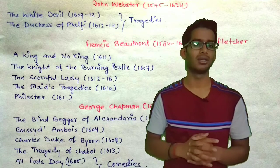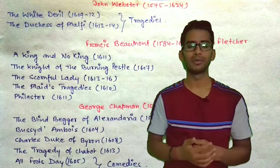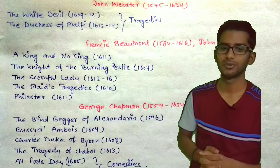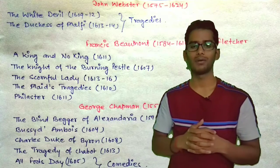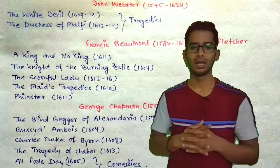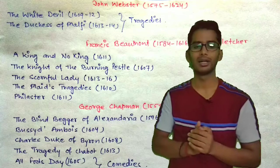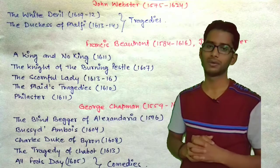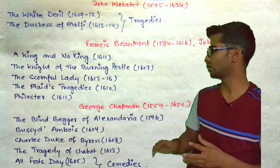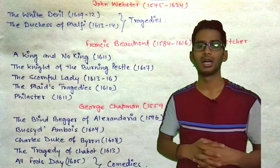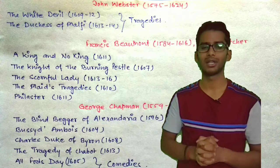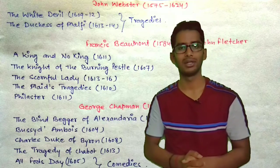George Chapman is another important writer. His works include The Blind Beggar of Alexandria, Bussy D'Ambois, Charles Duke of Byron, and The Tragedy of Chabot. All Fools and Eastward Ho are his best comedies. These are the writers you should study after Shakespeare in the development of drama.